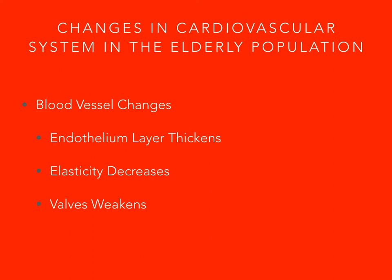The valves within the veins also begin to weaken, causing edema and blood clots to occur. Regarding blood volume, it also decreases with age, and in response to stress, red blood cell production also declines. Overall, white blood cells remain consistent; however, neutrophils tend to decline with age.